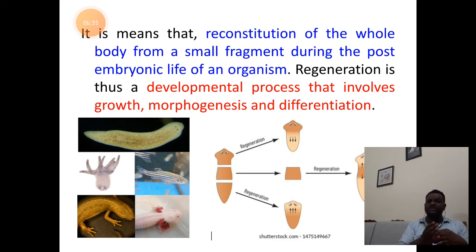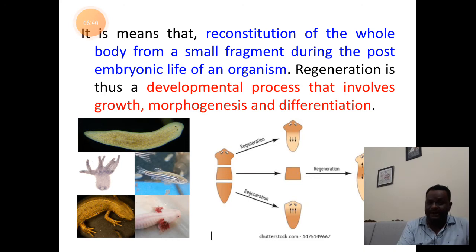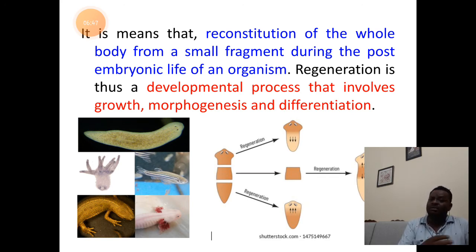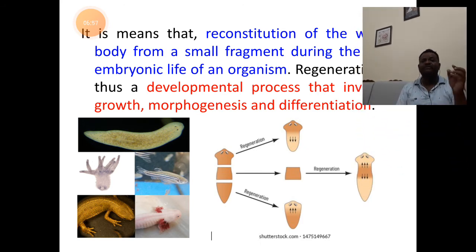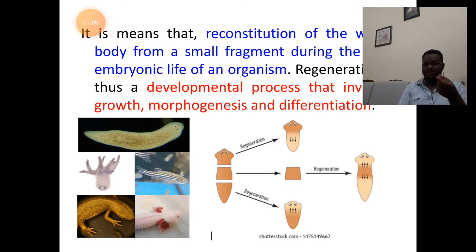Examples of regeneration include planaria, newt, hydra, fishes, and larvae of reptiles and amphibians. Towards the right side of the diagram we find the example of planaria where the body is cut into three pieces and each of the pieces can regenerate the body parts to form a whole organism in future.